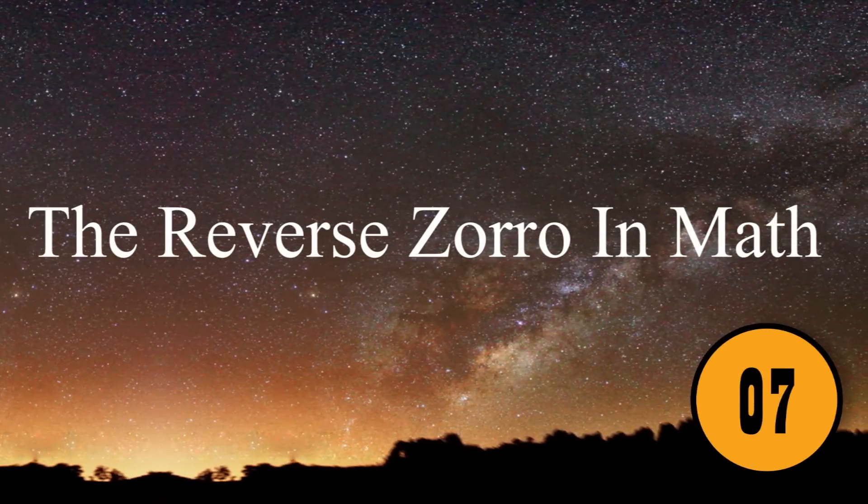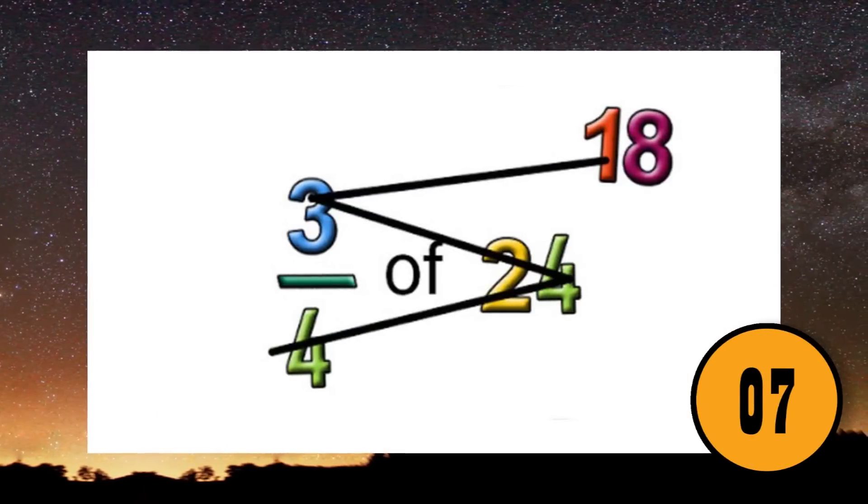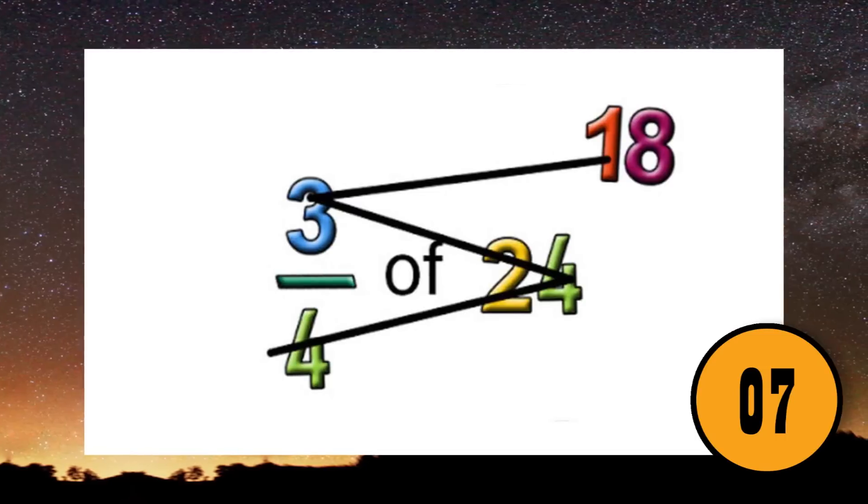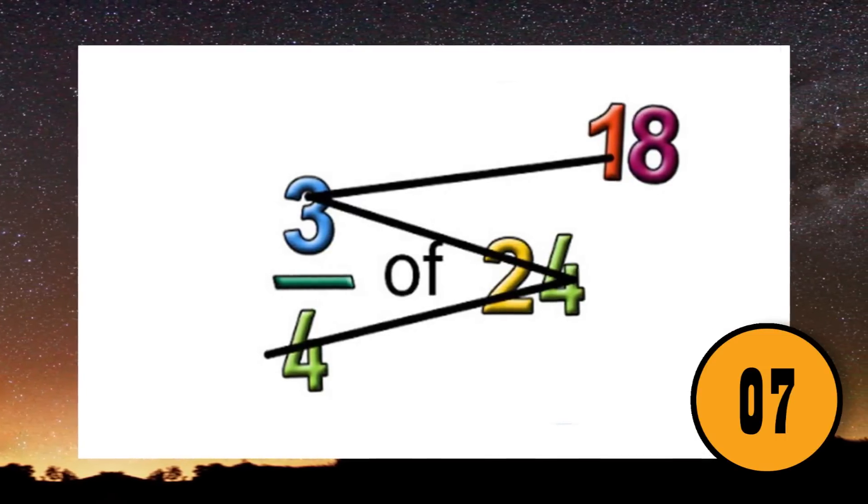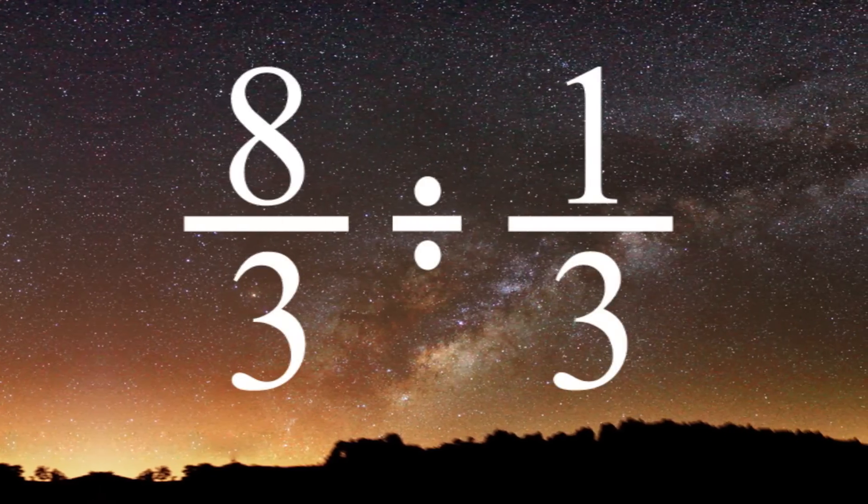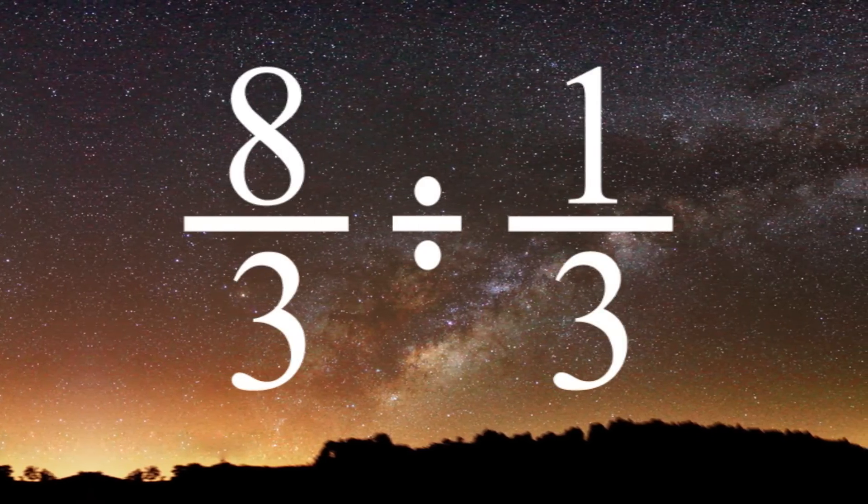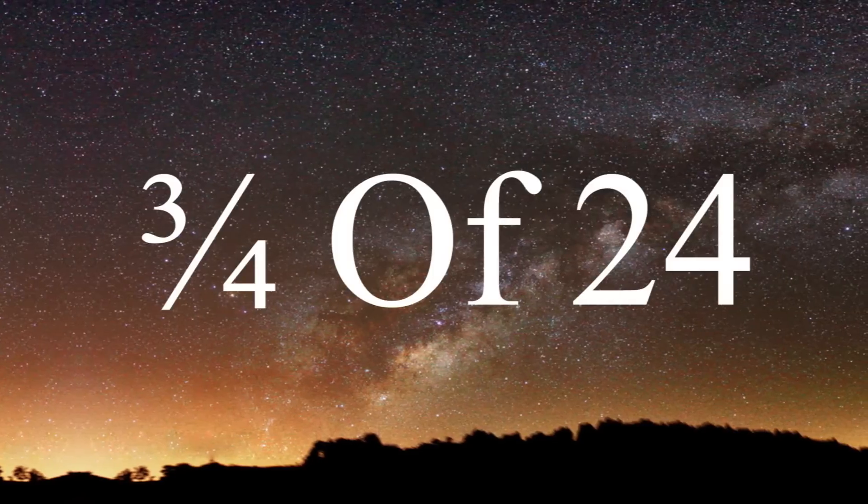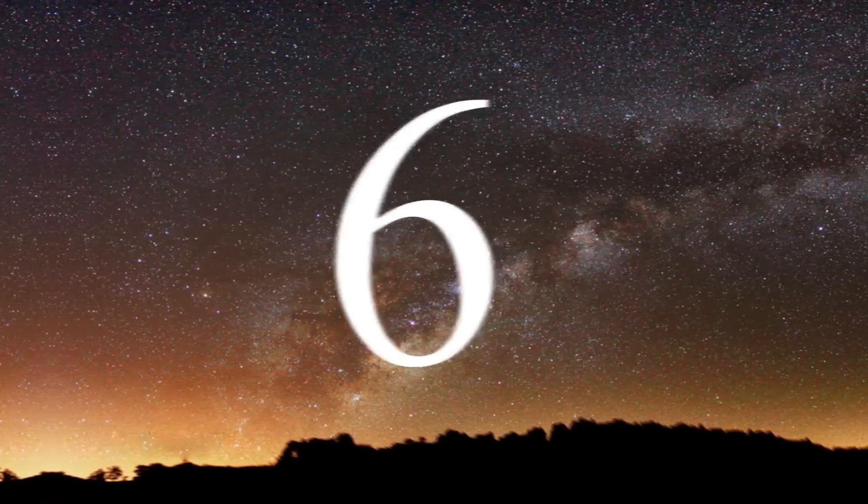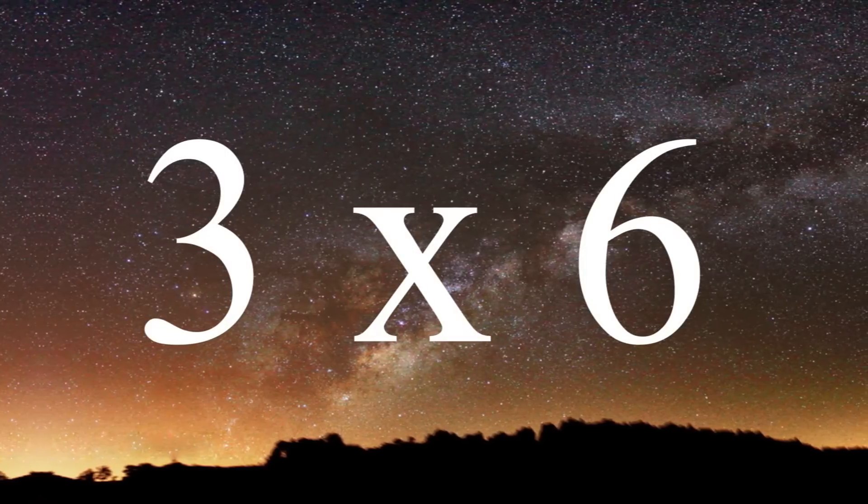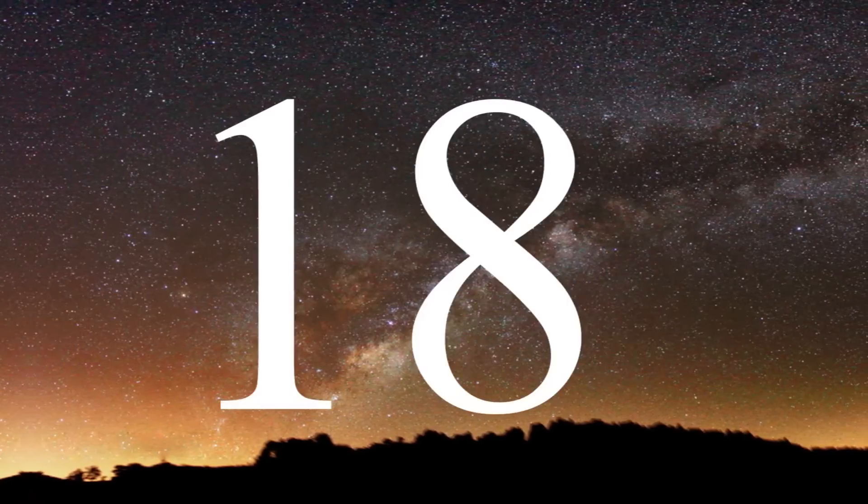7. The Reverse Zorro in Math. If you want to divide fractions and whole numbers, but you're not that good with math, you can use visuals to help. Start by using the bottom number of the fraction and divide it by the whole number. If you were trying to figure out 3 of 24, divide 24 into 4. The answer is 6. Next, multiply the 6 by the top number of the fraction and the answer is 18.